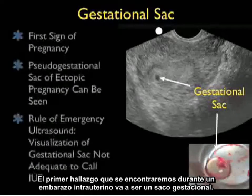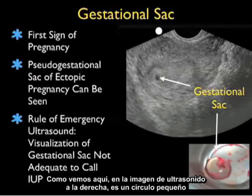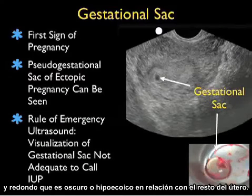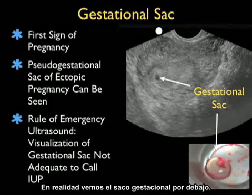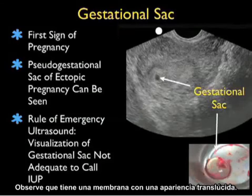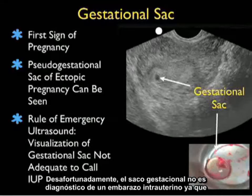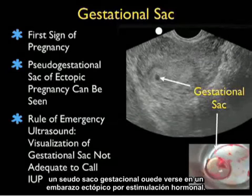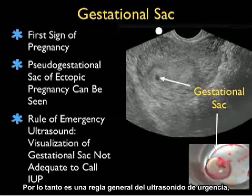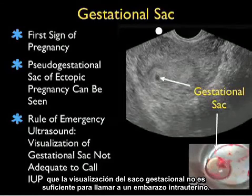The first finding that will occur during an intrauterine pregnancy is the gestational sac. As seen in the ultrasound picture, it's a small round circle that's dark or hypoechoic in relation to the rest of the uterus. Unfortunately, the gestational sac is not diagnostic of an intrauterine pregnancy, as a pseudo-gestational sac of ectopic pregnancy can be seen from hormonal stimulation. The general rule of emergency ultrasound is that visualization of a gestational sac alone is not adequate to call an intrauterine pregnancy.